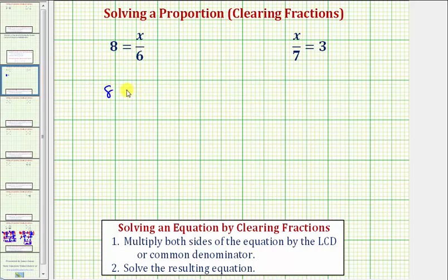So we have eight equals x over six, and now we multiply both sides by six. Because we have a fraction here, we multiply by six over one. So on the left side, we have six times eight, which is 48.